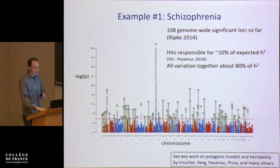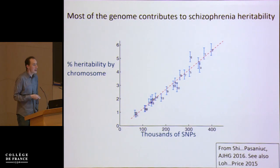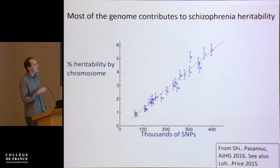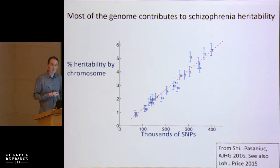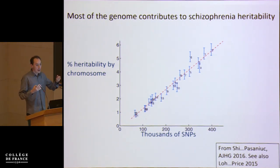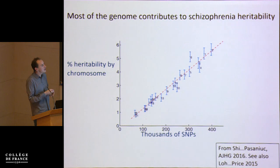Another way of looking at this is in terms of estimates of how much each chromosome contributes to heritability — a plot from Bogdan Passaniok's lab. The x-axis shows chromosome size in terms of thousands of SNPs; the y-axis shows an estimate of how much each chromosome is contributing. There's a very strong correlation between chromosome size and heritability contribution, which is what you'd expect in a model with an enormous number of variants. Chromosome 6 is a small outlier because the single biggest hit for schizophrenia is in the MHC region.